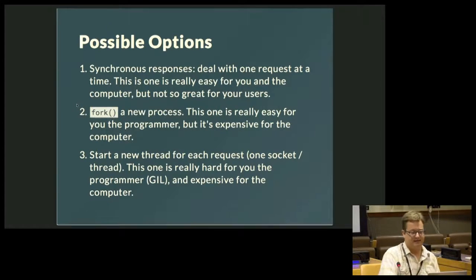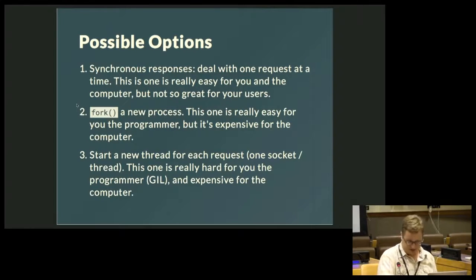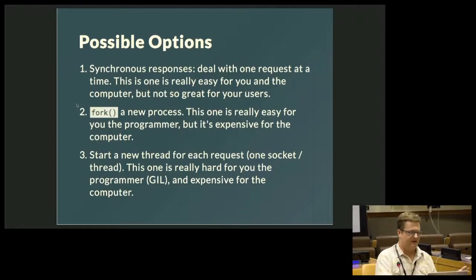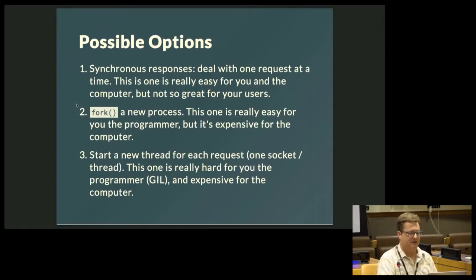The second option is we could fork a new process. This is really easy for you the programmer, but it's expensive for the computer — it's putting up a whole new process, which has a high expense for the kernel. The third option is you could start a new thread for each request, say one socket per thread. That's a lot harder for you the programmer because of the global interpreter lock — you have to make sure memory isn't being accessed by more than one thread at a time. It's also very expensive for the computer; when you have to spin up multiple threads, especially one per socket, that can be very expensive for the kernel as well.